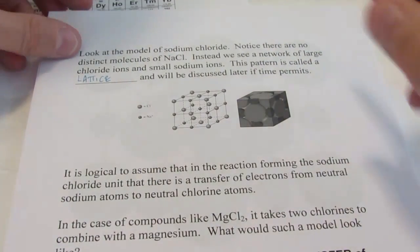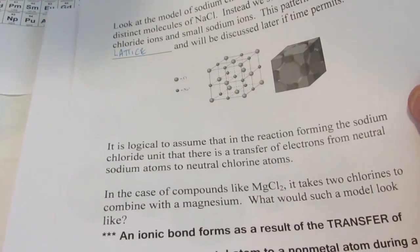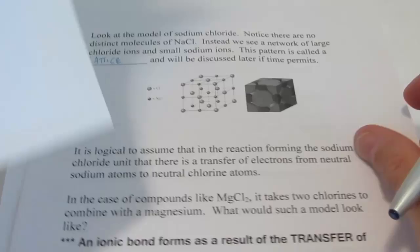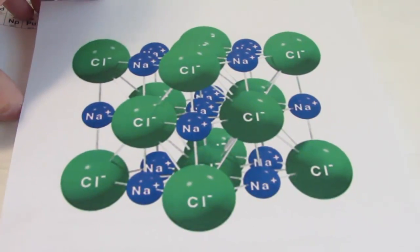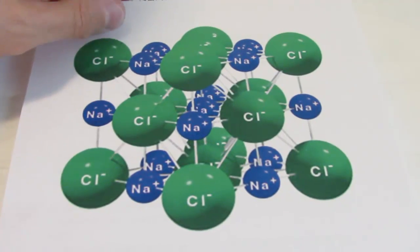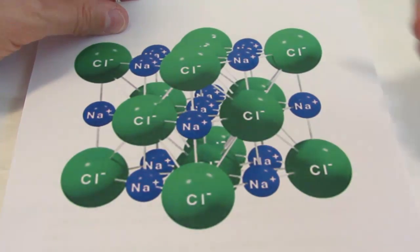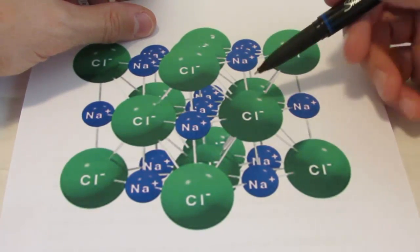This model's not that big, so what I did is I got a bigger picture for us to look at here. Hopefully we can see this a bit better. If you take a look at this crystalline structure, this lattice structure of sodium chloride. You'll notice there's not a molecule of sodium chloride.